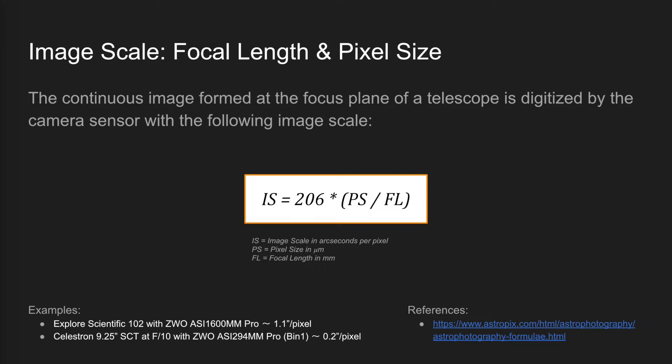At the other end of the spectrum, a Celestron 9.25-inch SCT coupled with a ZWO ASI 294MM Pro in BIN1 mode has an image scale of 0.2 arc seconds per pixel. So the question is, what image scale should we choose, and it is an important decision to make.